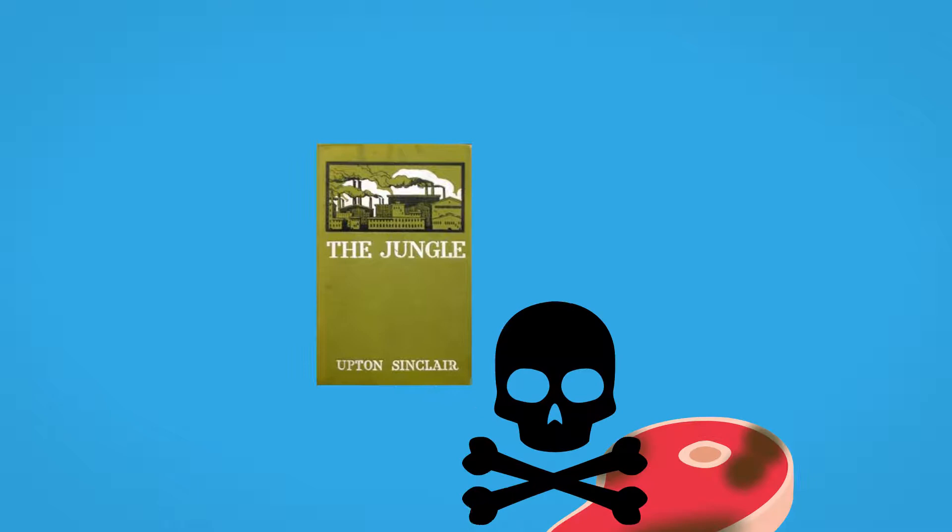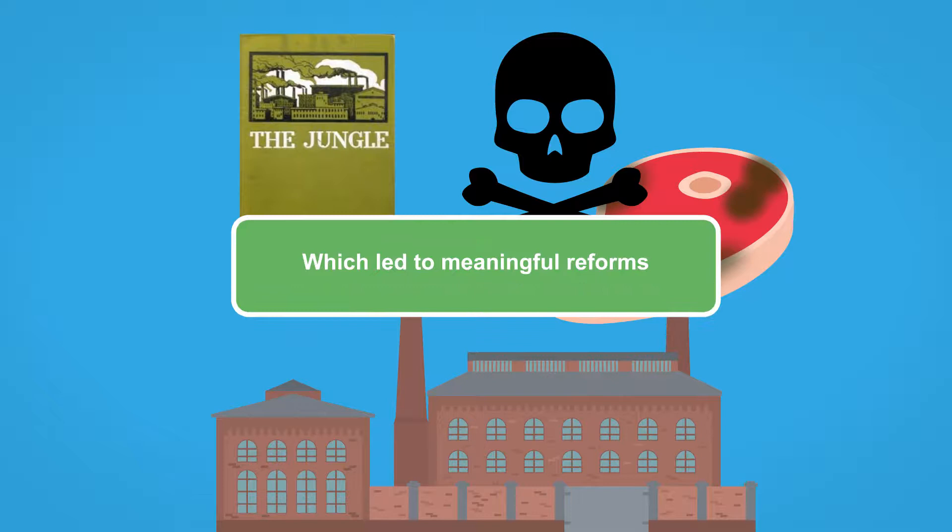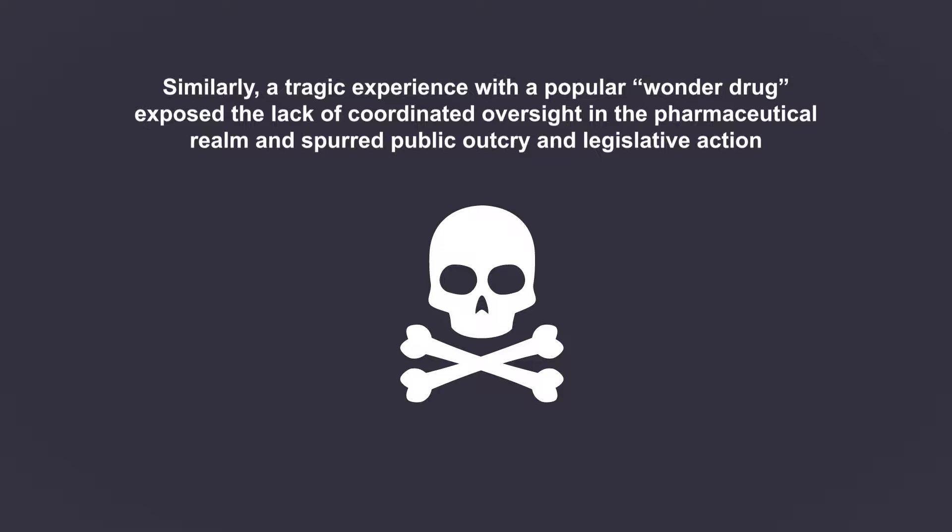A famous example was the publication of Upton Sinclair's novel, The Jungle, which highlighted health violations and unsanitary practices in the American meatpacking industry, which led to meaningful reforms.